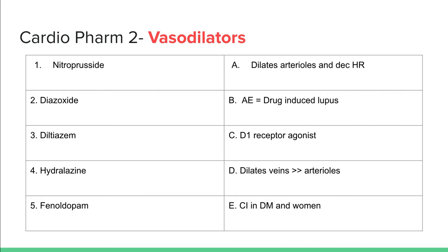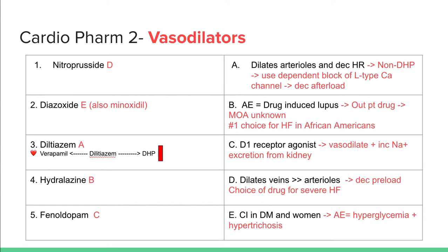The next slide is on vasodilators. Feel free to pause, try an answer, and then we'll get into the discussion. Nitroprusside is your drug of choice for severe heart failure. It acts on the veins more than on the arterioles, so it helps to significantly decrease preload.